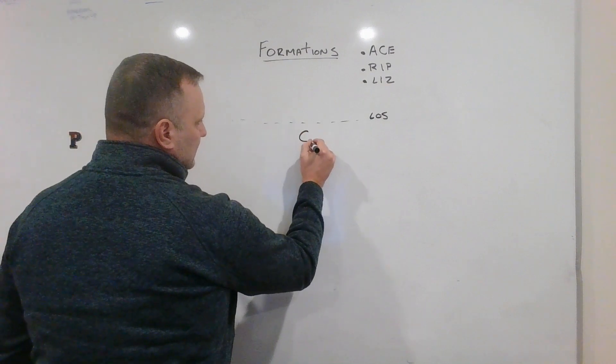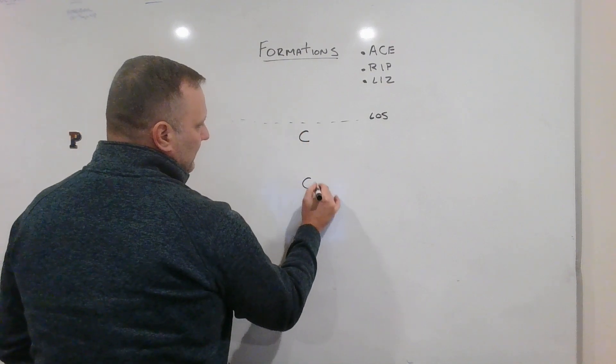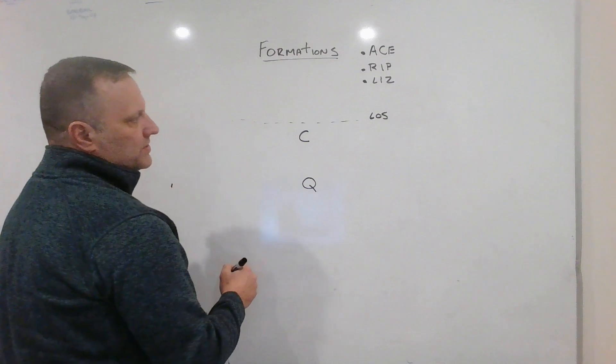The first player we're going to talk about is the center and the QB. It pretty much stays there about four yards apart.